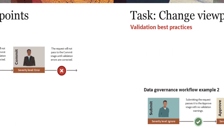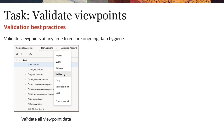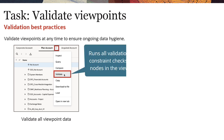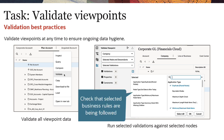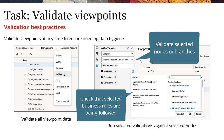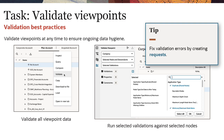You can validate viewpoints at any time to ensure ongoing data hygiene. To check all data in the viewpoint, validate at the viewpoint level — this runs all validations and constraint checks for all nodes. The Validate pane lets you selectively run specific validations for all or specific nodes. Use this option to check that selected business rules are being followed or to validate selected nodes or hierarchy branches. Fix validation errors by creating requests.